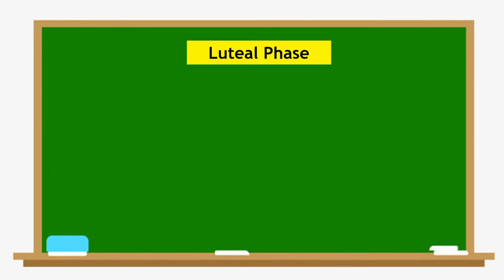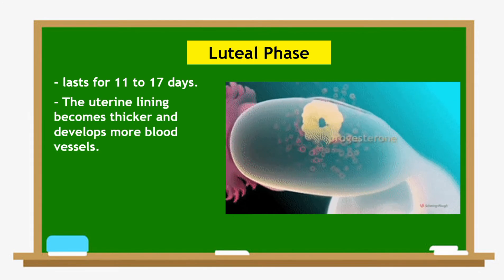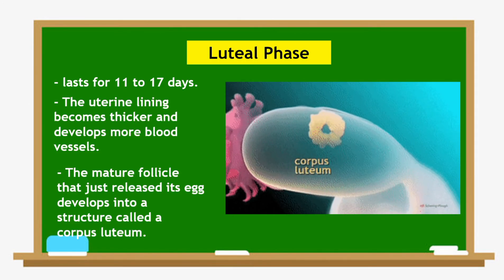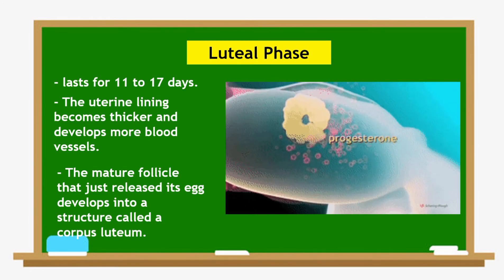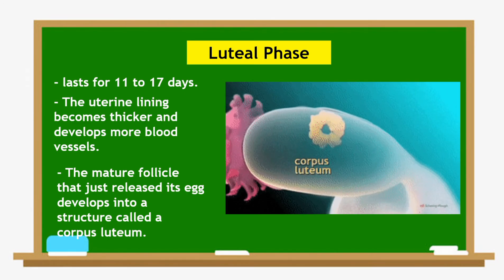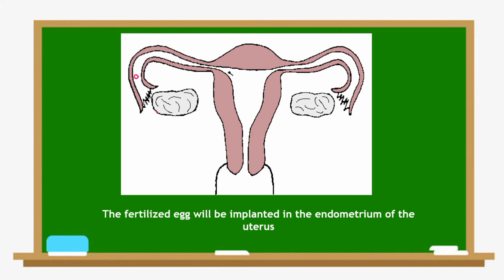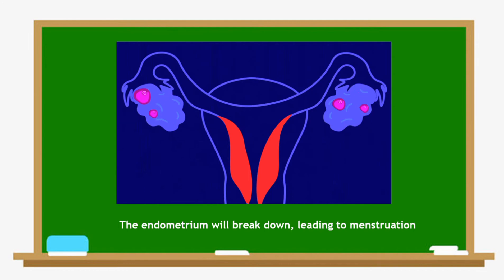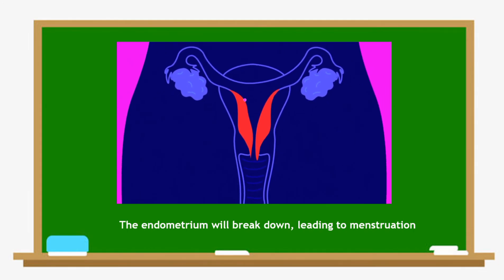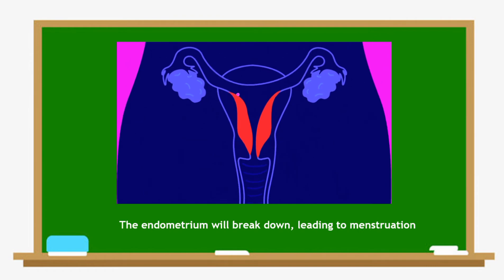The last phase is the luteal phase, which lasts for 11 to 17 days. The uterine lining becomes thicker and develops more blood vessels. The mature follicle that just released its egg develops into a structure called the corpus luteum. If the egg cell is fertilized by a sperm cell, the fertilized egg will be implanted in the endometrium of the uterus. If the egg is not fertilized, the endometrium will break down, leading to menstruation, and a new cycle begins.